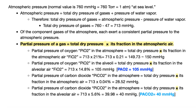The partial pressure of a gas equals total dry pressure times the fraction of that gas in the atmosphere. For oxygen: 713 times 21% equals approximately 150 mmHg. This important number is called PIO2 — the partial pressure of inspired oxygen. Note: FiO2 is just the 21% fraction, while 150 mmHg is the PIO2. The I stands for inspired.